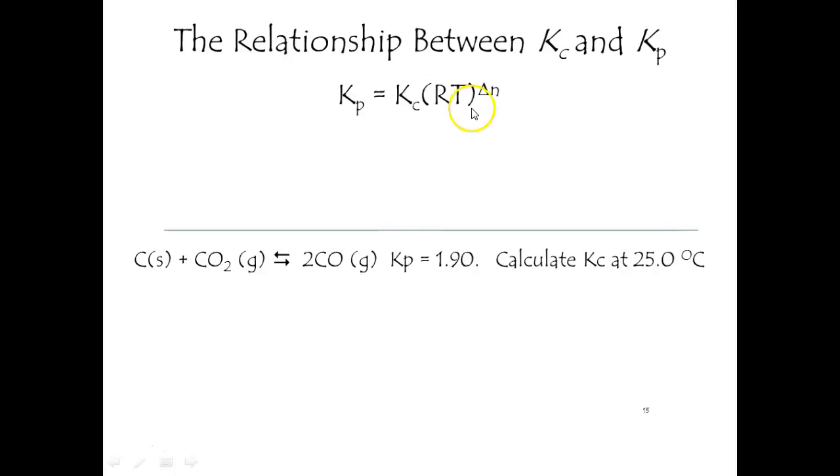The pressure constant is equal to the concentration constant times a constant r times the Kelvin temperature times the change in the number of gaseous moles. If you put a n sub g there, that would help you remember that it's gaseous moles.